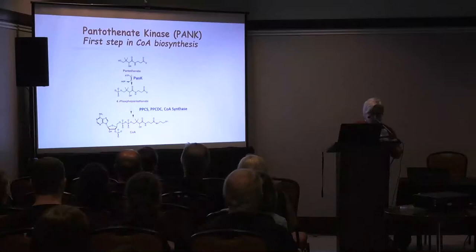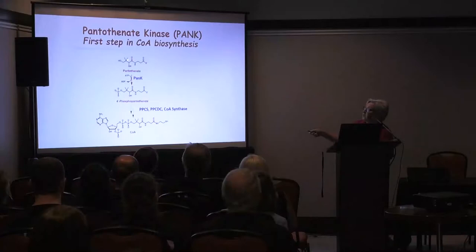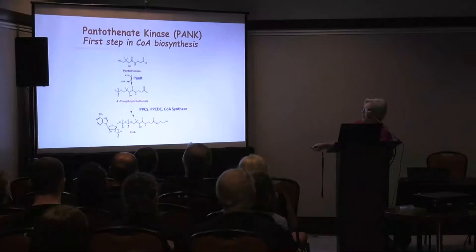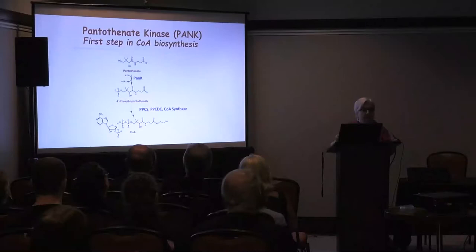The PAN-K is an enzyme that performs a chemical reaction transferring a phosphate group to vitamin B5 — pantothenate. Once pantothenate becomes phosphorylated, four more reactions happen very quickly to form coenzyme A. The constriction point in the whole synthesis of coenzyme A occurs at this PAN-K step, which is what we discovered back in 1980. The therapy I'll discuss later is based on that initial discovery.